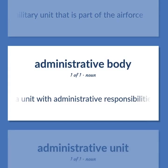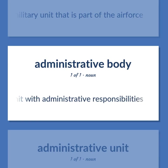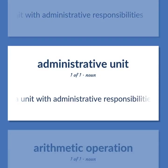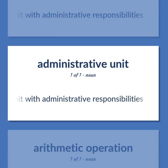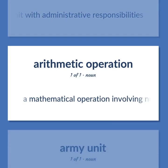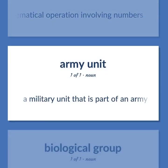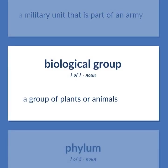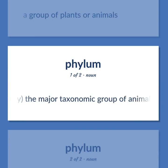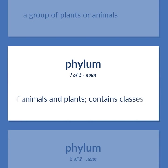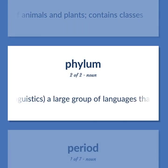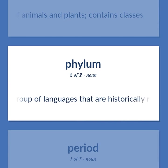A military unit that is part of the Air Force. A unit with administrative responsibilities. A mathematical operation involving numbers. A military unit that is part of an army. A group of plants or animals. Biology: The major taxonomic group of animals and plants — contains classes. Linguistics: A large group of languages that are historically related.